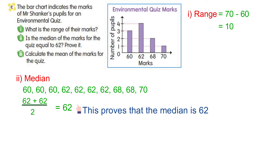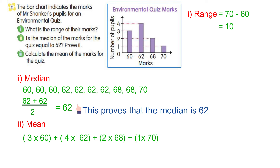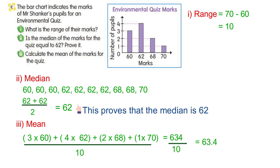Now calculate the mean of the marks for the quiz. To find the mean, find the total marks and divide by the total number of pupils. The total marks will be 632 and the total pupils will be 10. So 634 divided by 10, and the mean will be 63.4.